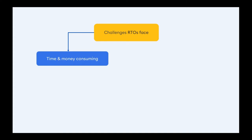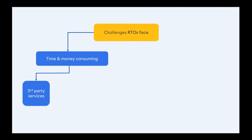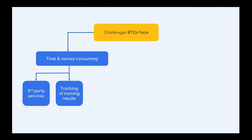Let's talk about time and money consuming challenges. There are three cases I would like to cover. The first is when an RTO uses third-party services for content creation. This can cost a lot of money because they create content once and you pay for it, but anytime you need to update your content, you'll need to pay for each update. The second challenge is that the process of tracking results is not automated — most of the time RTOs track results manually, which is very time consuming.